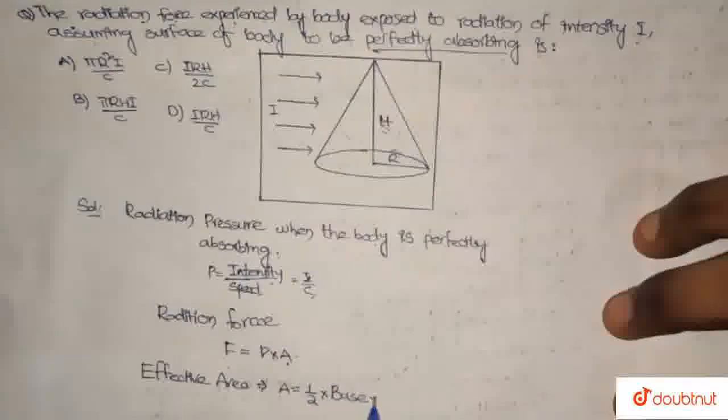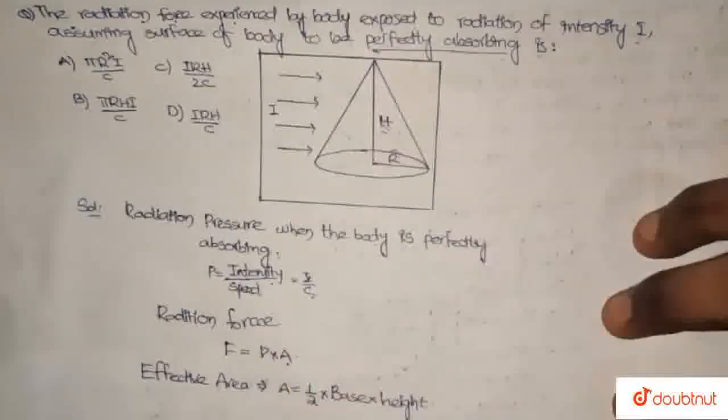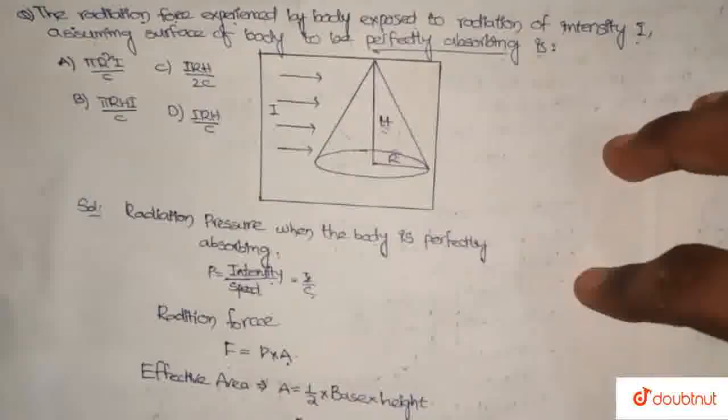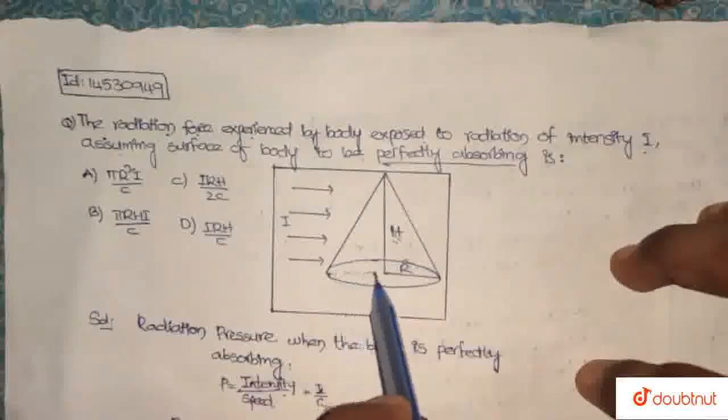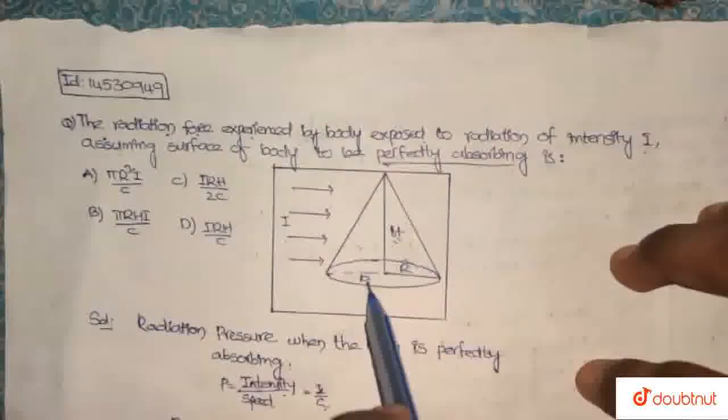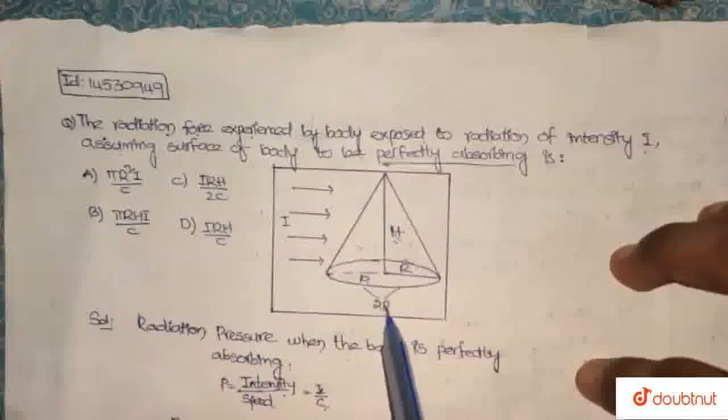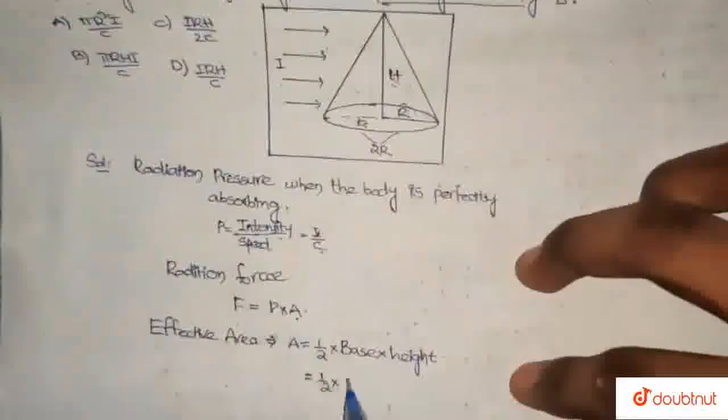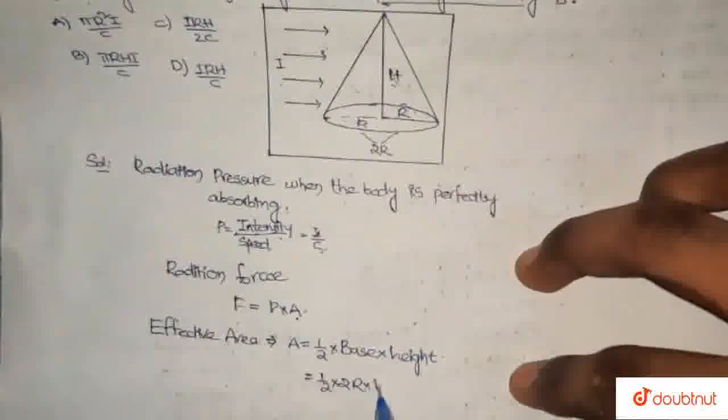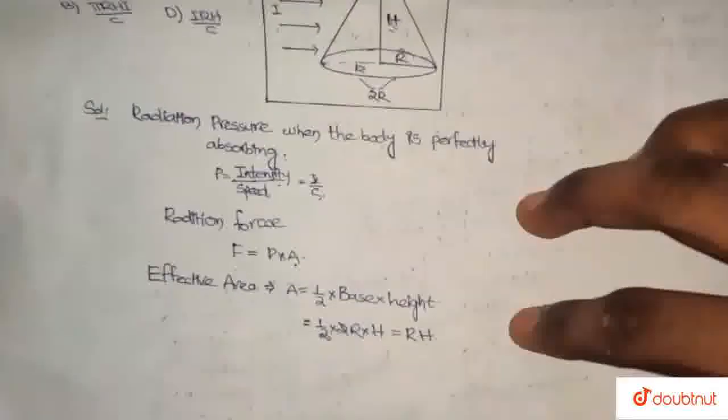The effective area for this triangular form is half into base 2R into height H. The 2 cancels out, so the effective area here is R into H.